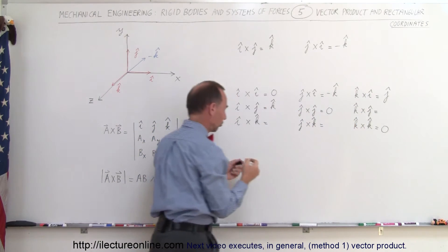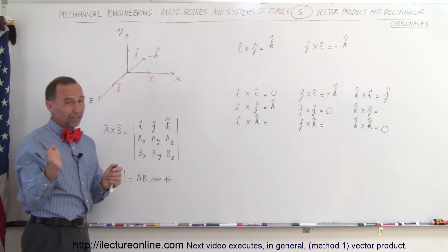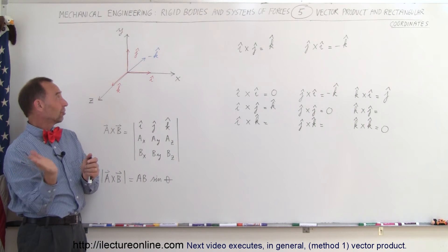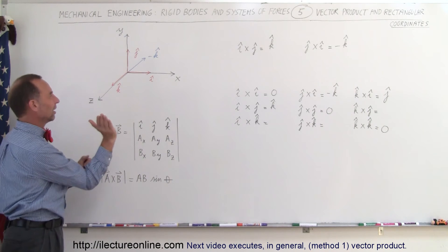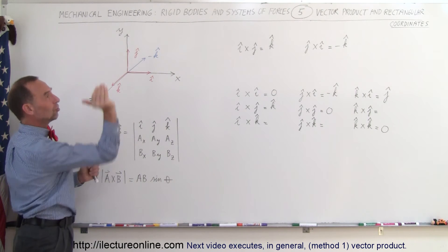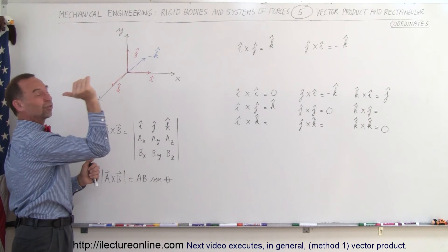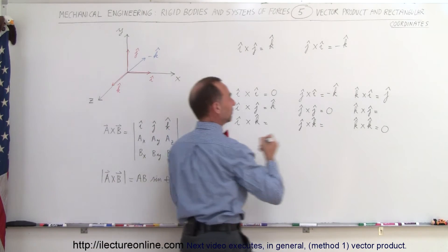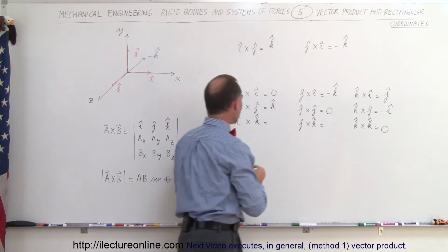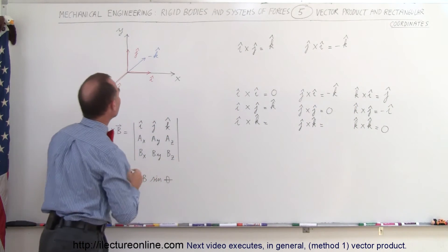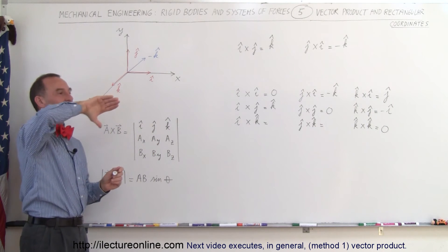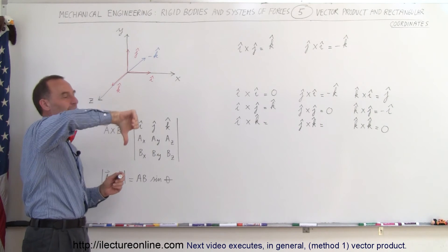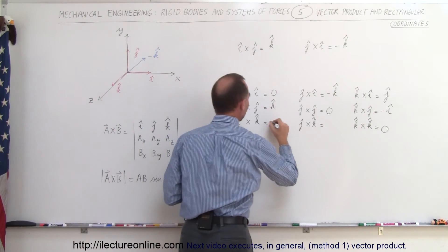How about K cross J? Well, point your fingers in the direction of the K vector, then point your fingers in the direction of the J vector. That's kind of difficult to do. K is out of the board, J is up, notice my thumb points to the left, which is a negative X direction, so we get a negative I for that. Alright, moving on. I cross K - so we do the I vector this way, K vector out of the board, it'll be a negative J because my thumb points downward, so negative J.